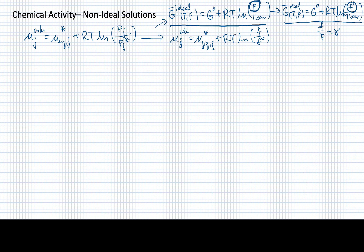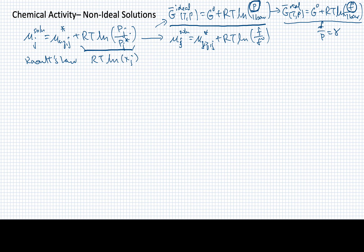We do have instances where our solution may change the expression that we end up with. Remember that when we have Raoult's Law, we can relate the vapor pressure to the mole fraction times the ideal vapor pressure, so the last term turns into RT times the log of the mole fraction. This is the part that we want to see how it changes when we go from an ideal solution to a non-ideal solution.